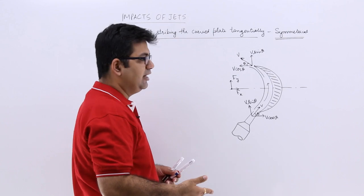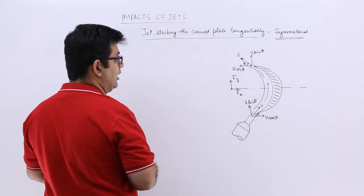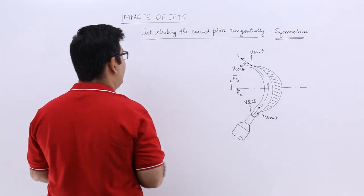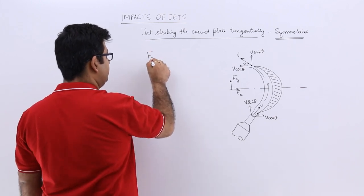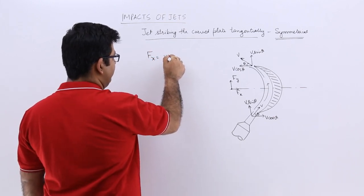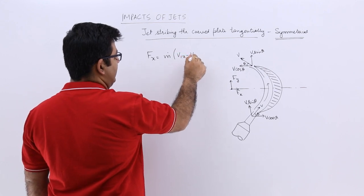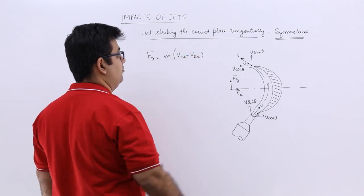So let's find out the direction or the force in the direction x and y. So you will have Fx, which is equal to mass flow rate into v1x into minus v2x.